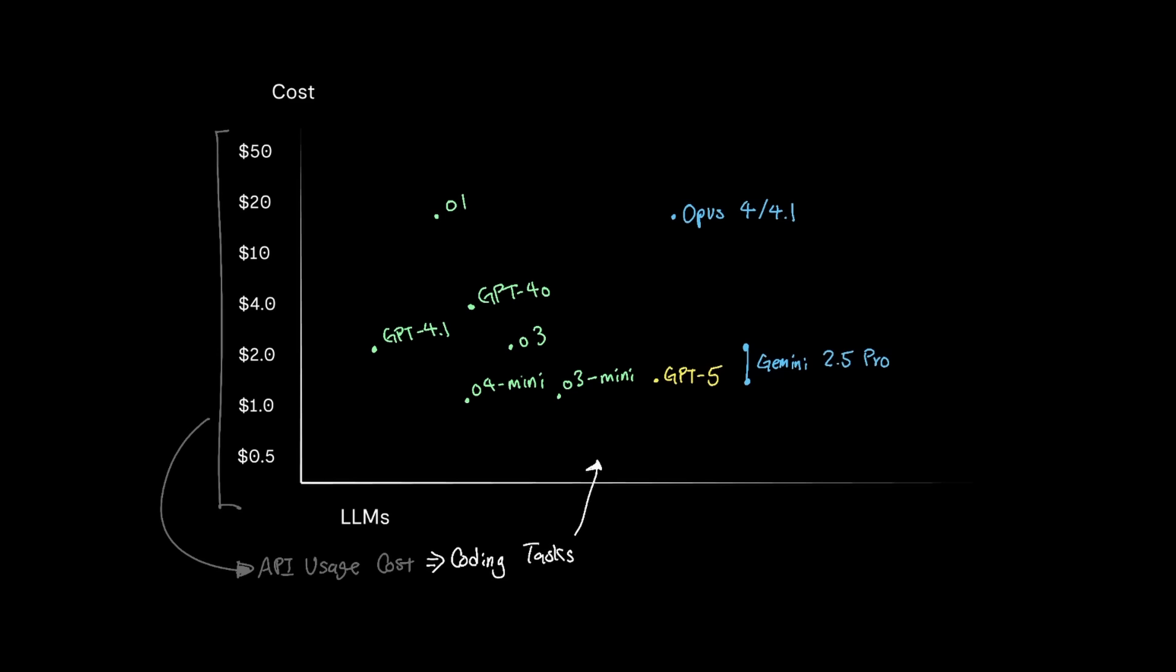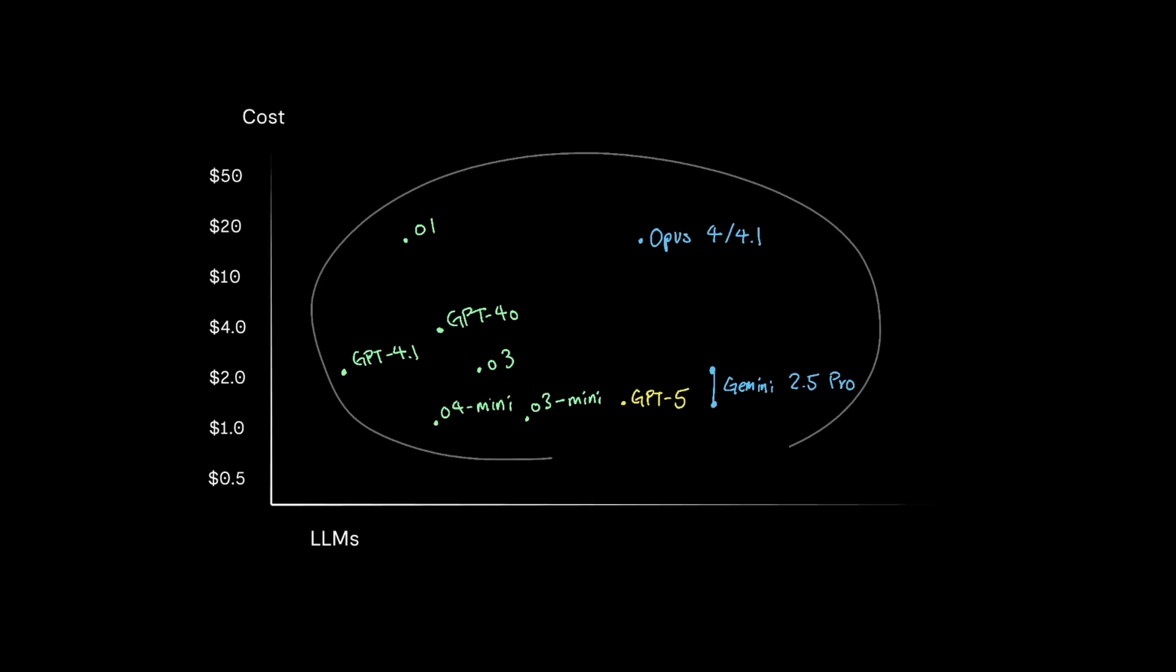And coding-related tasks typically require a model that's at least at the level of GPT-4.1. So even if GPT-5 model is only as good as GPT-4.1, we're practically spending half as much as we used to. Which brings me to the next point.